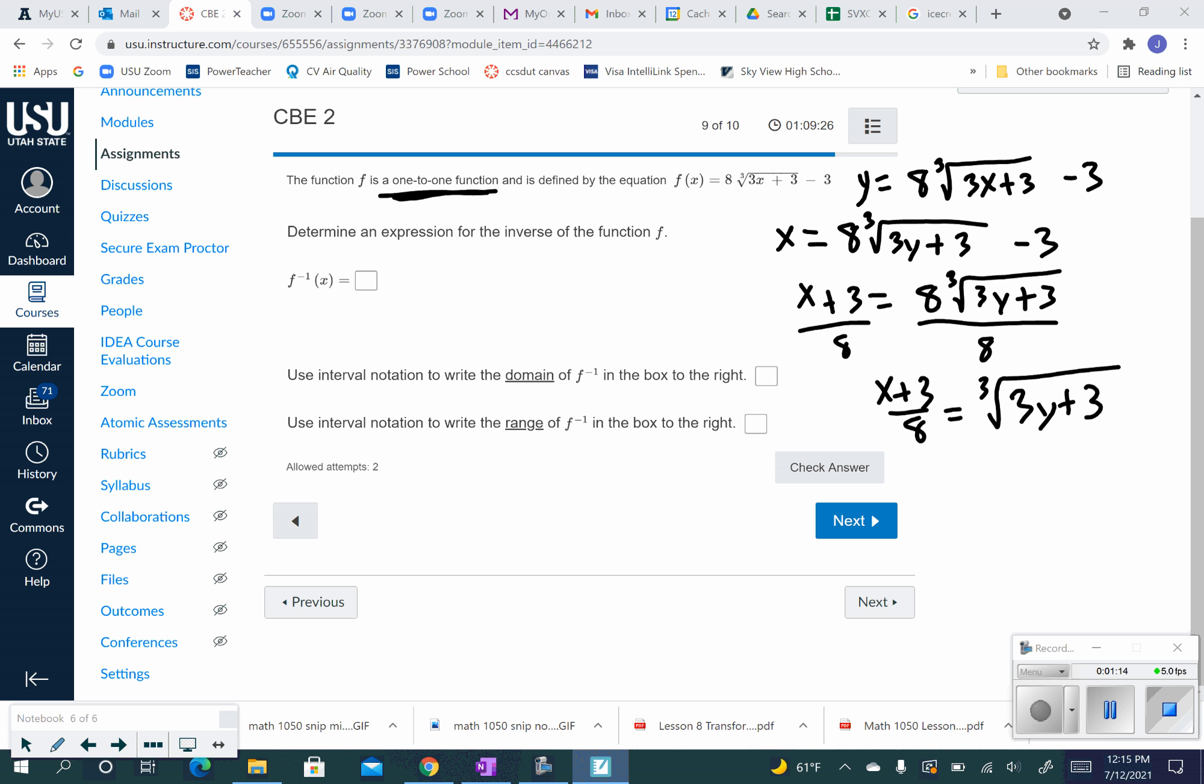So I cube both sides. Get rid of the cubed root. So now I have, I'm going to put the x plus 3 cubed on top. Then I can cube the 8. That's 8 times 8 times 8. I'll grab a calculator to find that here in just a second. And then on the right side, so that 8 cubed is 512.